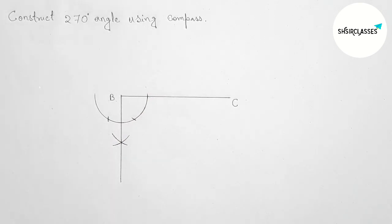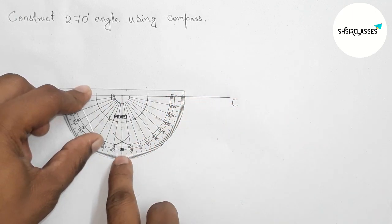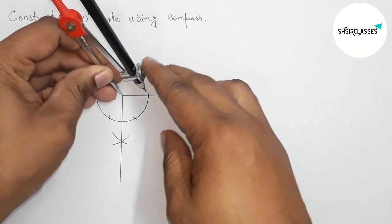degree angle. So first, we have to draw a 90-degree angle below the side BC this way. Now, checking whether it is 90 degrees or not. This is perfectly a 90-degree angle. Okay, now I am